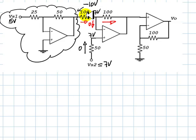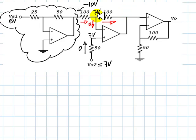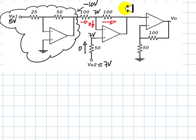The resistors are equal, so the voltage drop between the input node and the virtual ground node equals the drop across the feedback resistor. This means the output node of the second amplifier is 17 volts higher than 7 volts, giving us 24 volts.